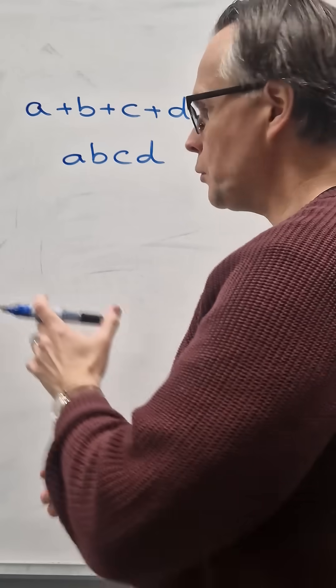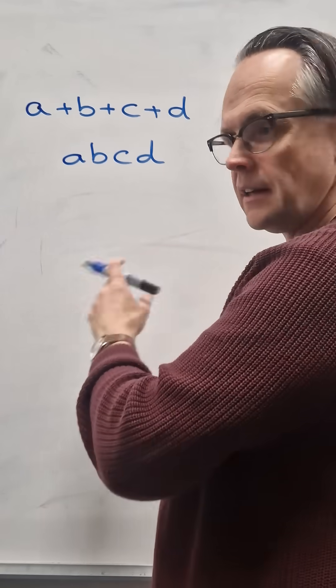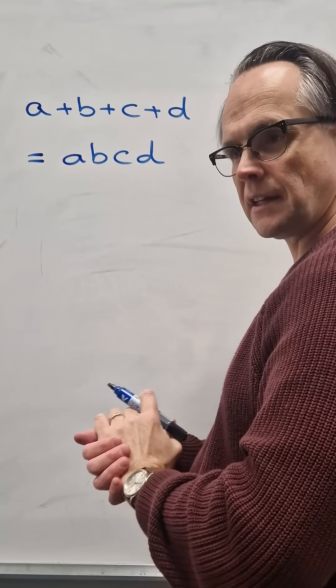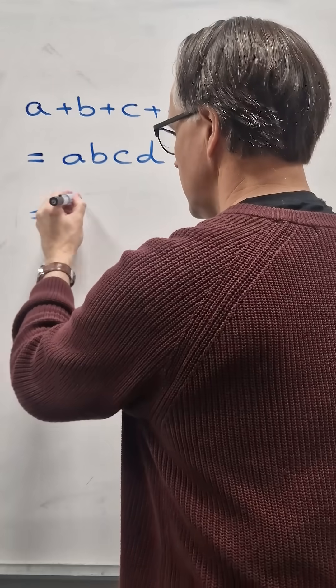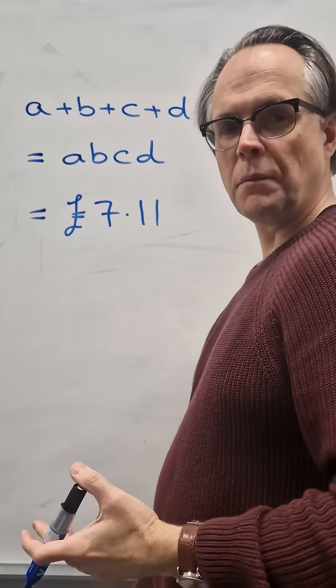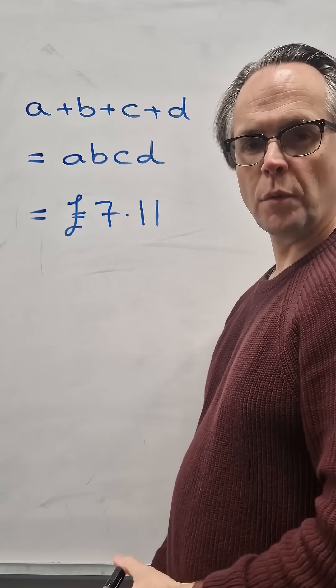The amazing thing is when they multiply the four prices together, it comes to the same amount as if they added the four prices together and that amount is seven pounds eleven. And the puzzle is what are those four prices?